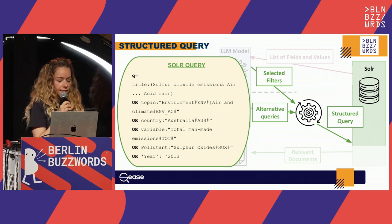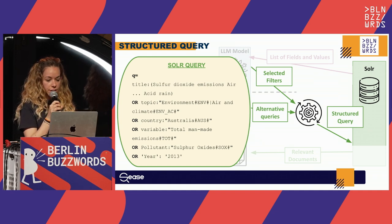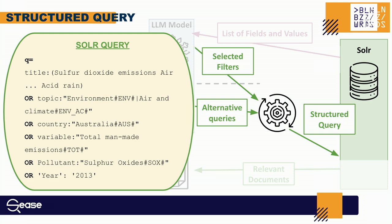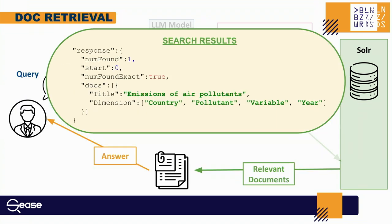We then put all this together in the final Solr query. The generative terms are placed inside the title field for searching, while the selected features are added with conditions: topic 'environment,' country 'Australia,' variable 'total main emissions,' and so on. This is a simple Solr query just to demonstrate performance — you can of course complicate and tune it for your specific purposes. The final search results include documents related to emissions of air pollutants, containing the dimensions the user was searching for: country, pollutant, variable, and year.